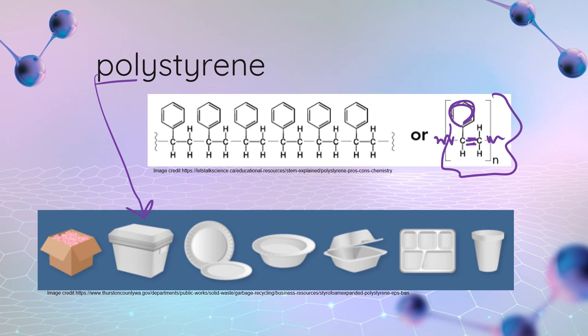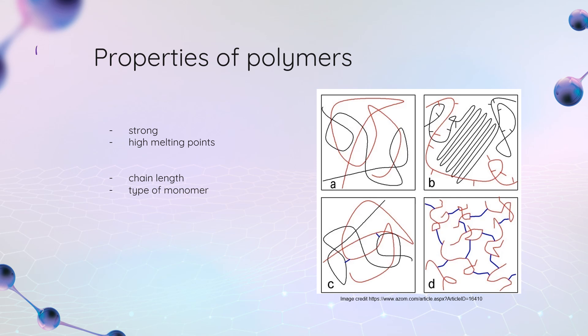Of course these polymers are not great for the environment. What are the properties that make them so problematic? They're super strong and have high melting points — which is also why they're so convenient for us. How strong and how high the melting point is depends partly on chain length, and also on what kind of monomer is used: simple ethene molecules versus monomers with methyl groups, chlorides, or phenyl groups, all of which add a bit more intermolecular force among the strands.